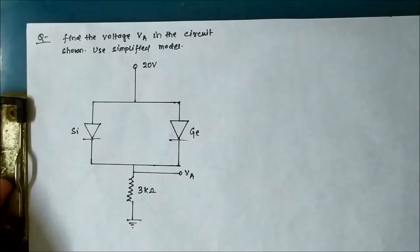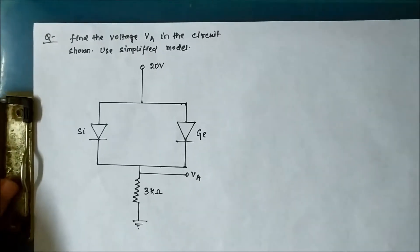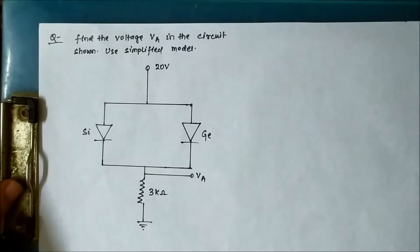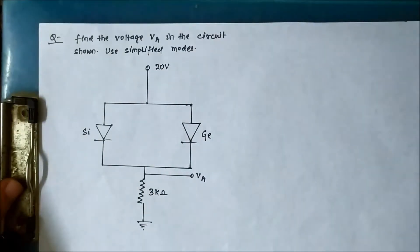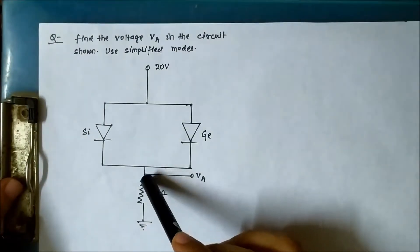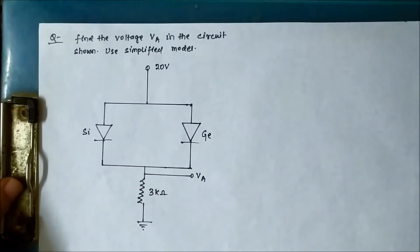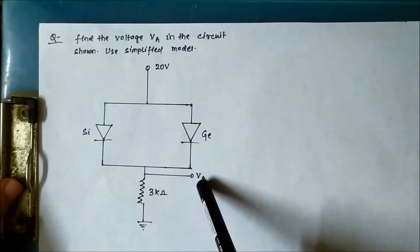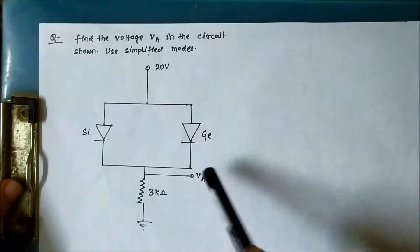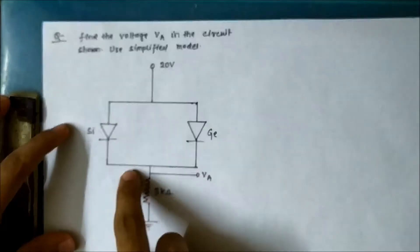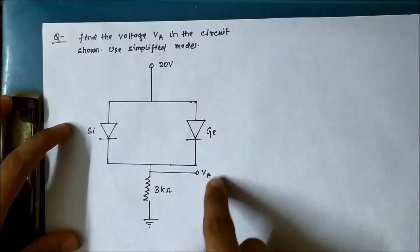This is a problem related to p-n junction diodes to understand an important concept. The circuit has two different diodes — one silicon and one germanium — connected with their p-ends to a 20 volt voltage source, while the n-ends are shorted together and connected to ground via a 3 kilo ohm resistance. We have to calculate the voltage from point A to ground, written as V subscript A.